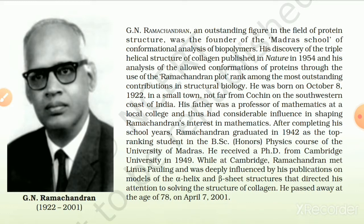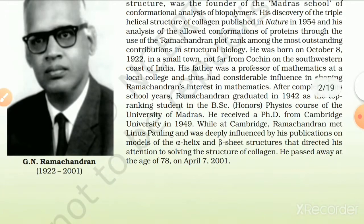He was born on October 8, 1922, in a small town not far from Cochin on the southwestern coast of India. His father was a professor of mathematics at a local college and had considerable influence in shaping Ramachandran's interest in mathematics. He graduated in 1942 as the top-ranking student in the B.Sc. Honours Physics course of the University of Madras and received a Ph.D. from Cambridge University in 1949. While at Cambridge, Ramachandran met Linus Pauling and was deeply influenced by his publications on models of the alpha helix and beta sheet structures, which directed his attention to solving the structure of collagen. He passed away at the age of 78 on April 7, 2001.